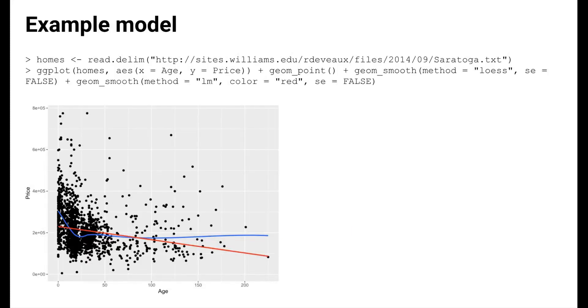To use a concrete data example, we'll look at housing data from upstate New York. We're interested in the relationship between house price and house age, and we visualize this relationship with a scatter plot.